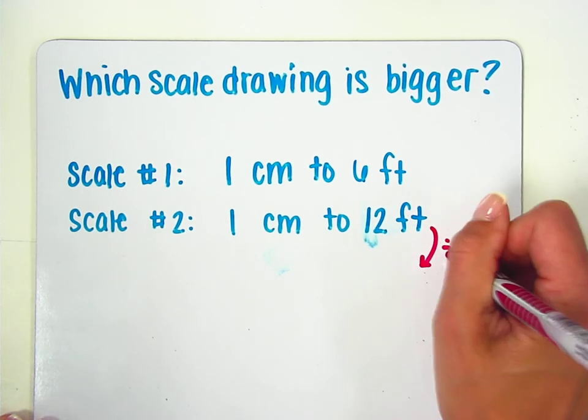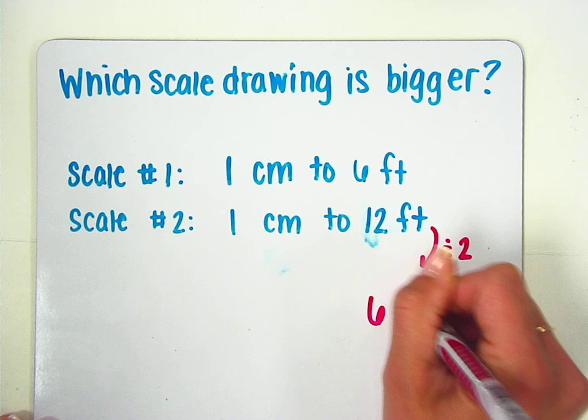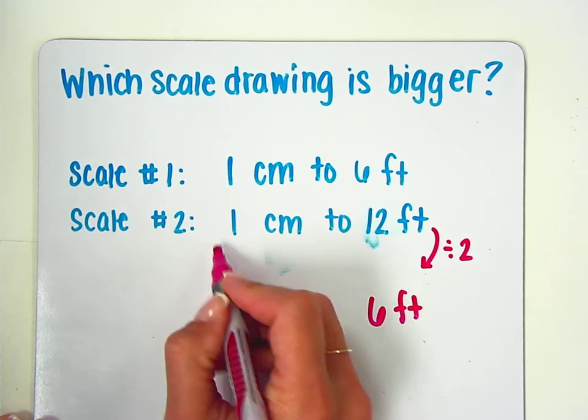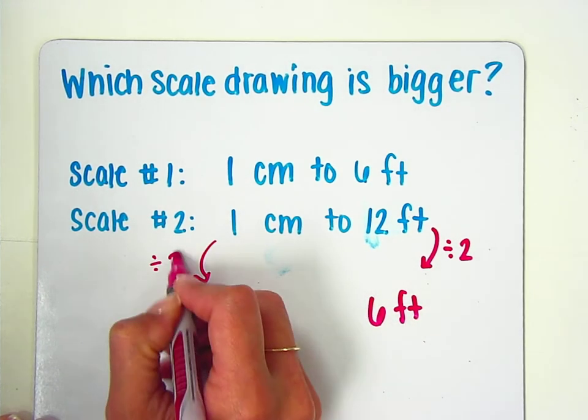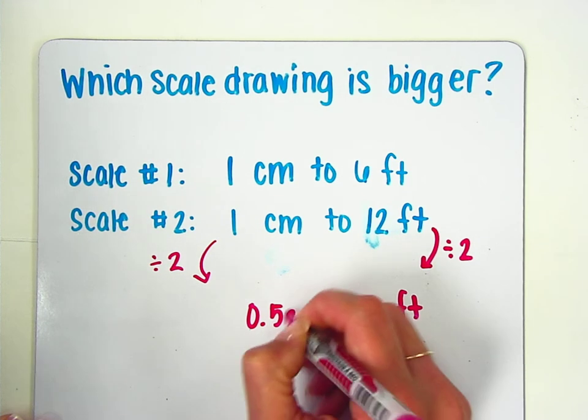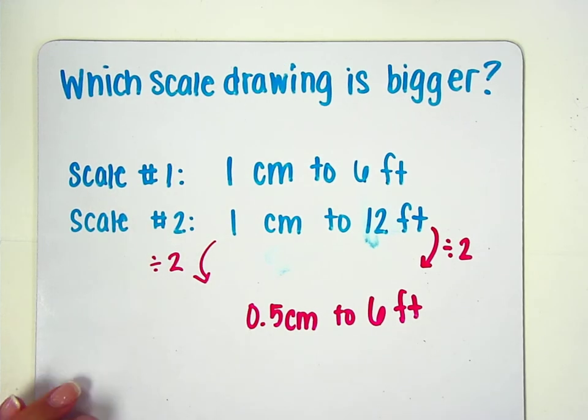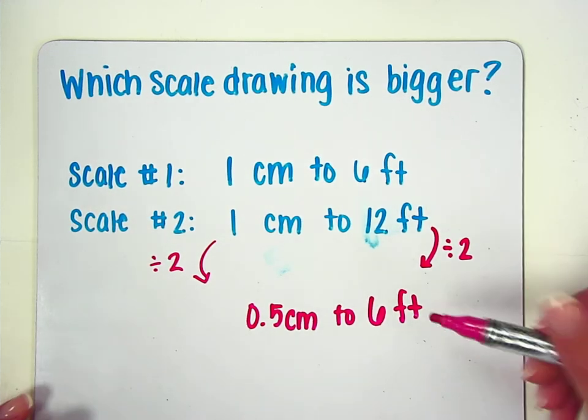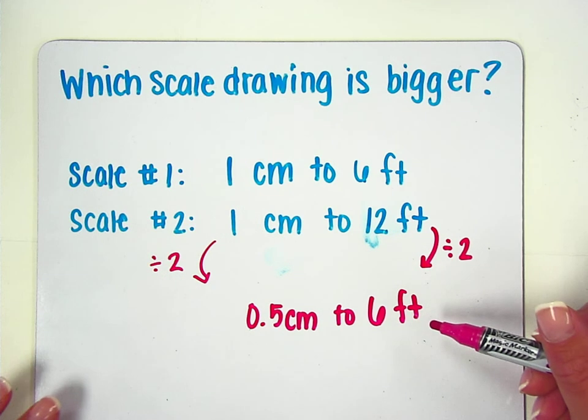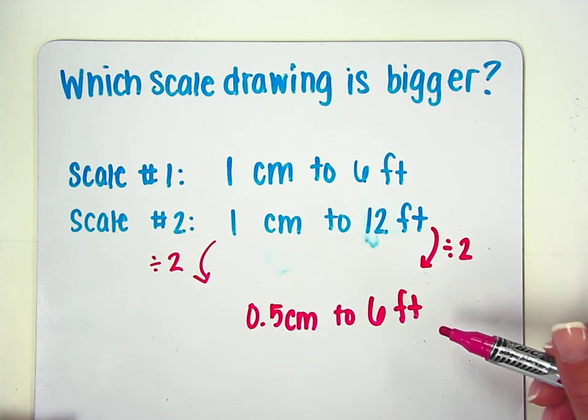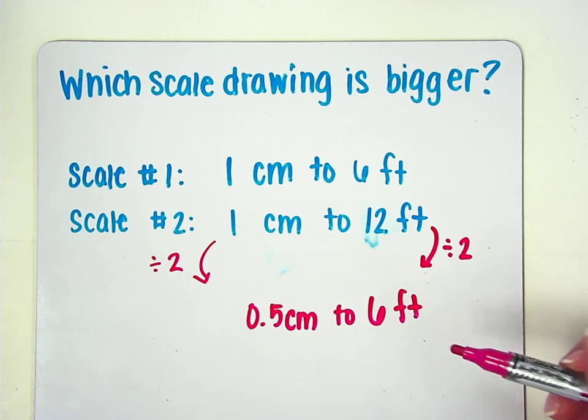we would need to divide this by 2 to get to that 6 feet. So we'd also have to divide this by 2. So we would have 0.5 centimeters to 6 feet. So in this case we would need half as many centimeters to get to the same distance on the original scale drawing. So the second scale should be half as big. Therefore scale number 1 is bigger than scale number 2.